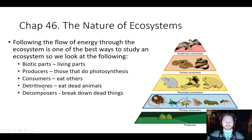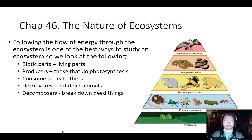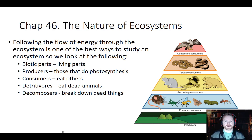We also have detritivores and decomposers. Detritivores usually eat things that are dead — like dead animals. For example, fly larvae and maggots eat carrion. Vultures, certain beetles, and worms break down dead things — those are detritivores. Anything that's dead is called detritus. Decomposers, like bacteria and fungus, break down organic molecules and return them to the soil, recycling those nutrients back into the ecosystem.